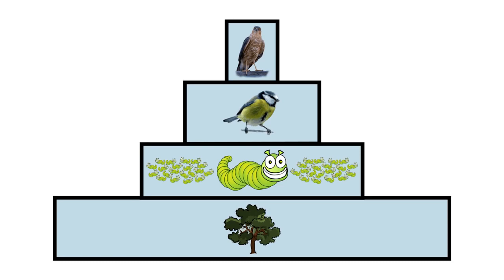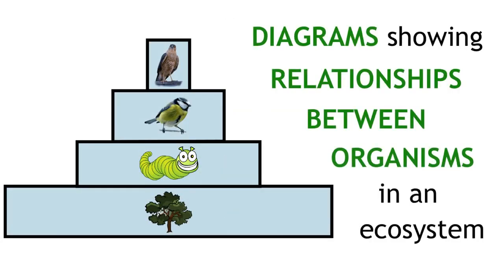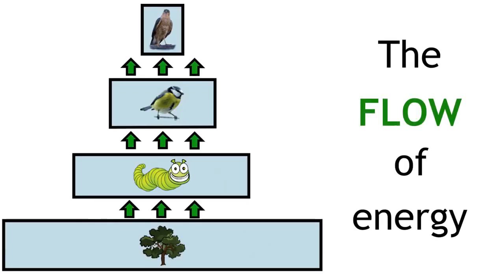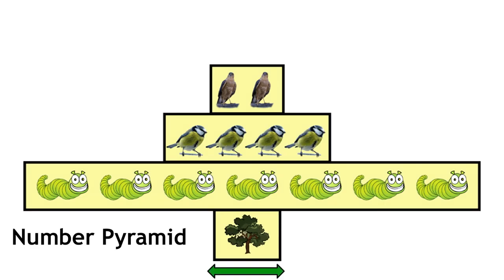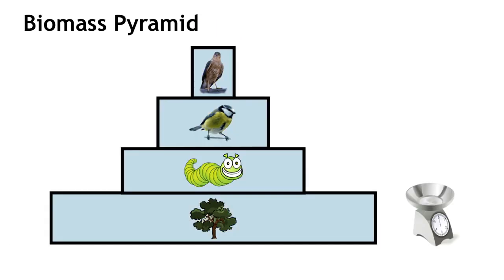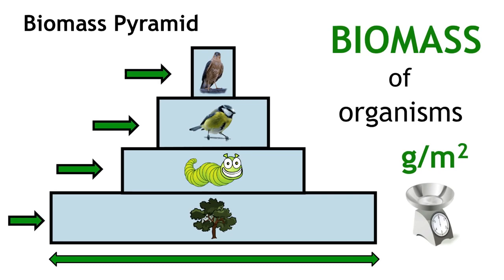So, to recap, ecological pyramids are diagrams that we use to visually represent the relationship between organisms in an ecosystem. The bars each represent trophic levels and their order represents the flow of energy. The width of the bar in the number pyramids represents the number of organisms in that trophic level. The width of the bar in biomass pyramids represents the biomass of the organisms in that trophic level.